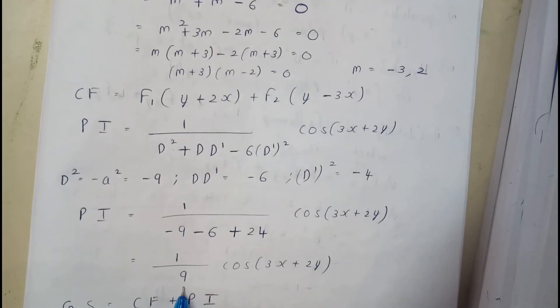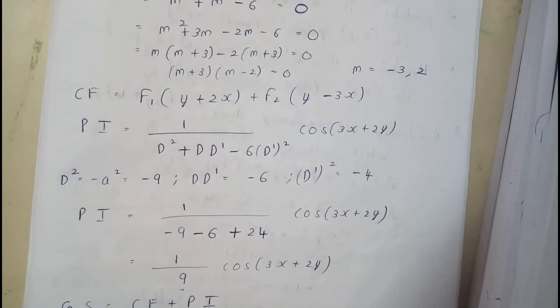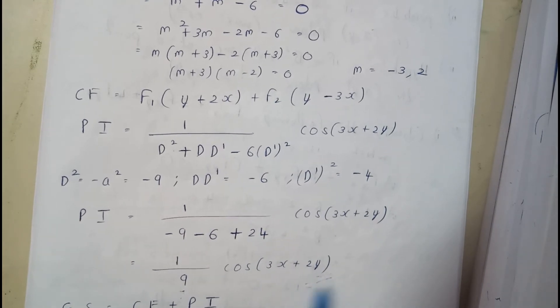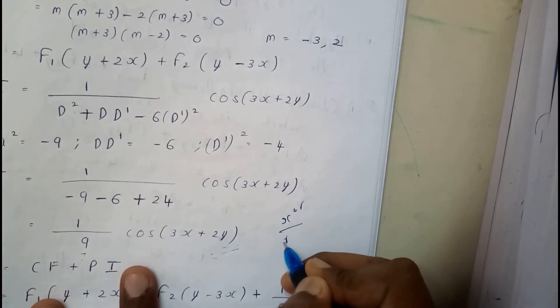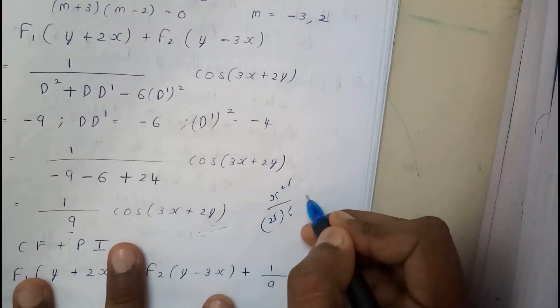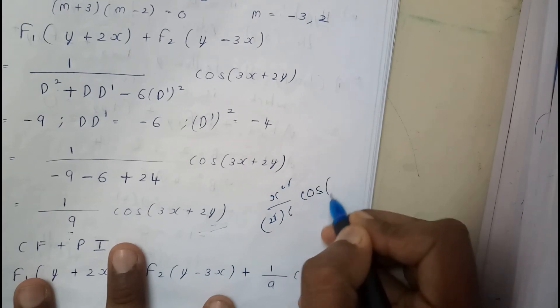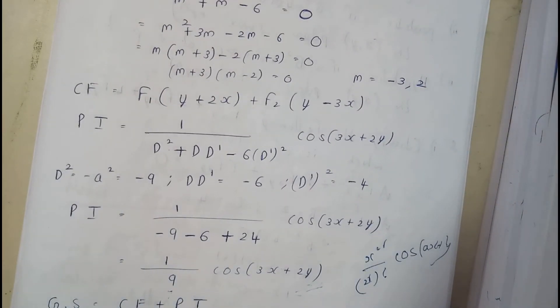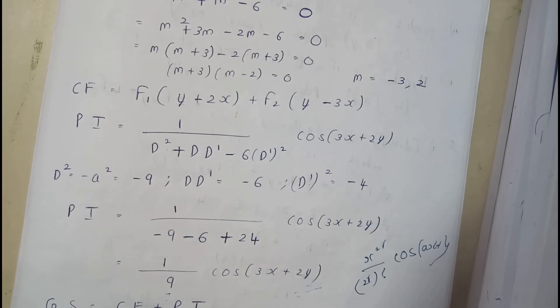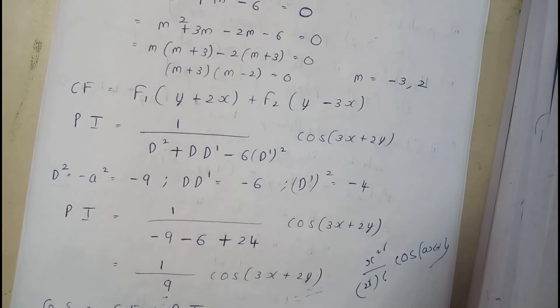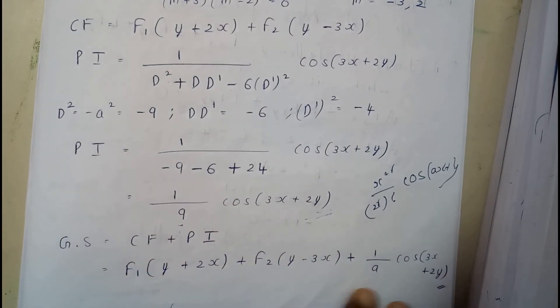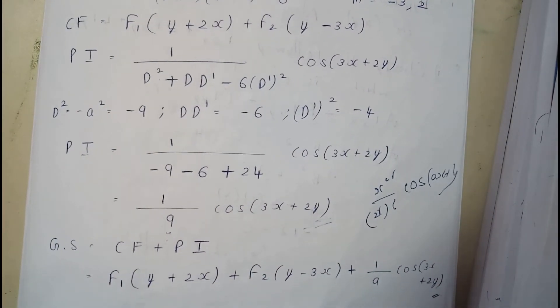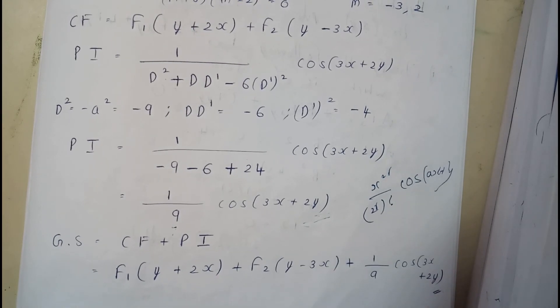Once we substitute the values, if the denominator is not equal to zero the result is in the normal form; if it is zero, it takes the form x^(2r)/(2r)! into cos(ax + by). The general solution is complementary function plus particular integral. I hope everyone is clear with all these steps. In the next tutorial we'll go through the next type of problems — thank you for watching.